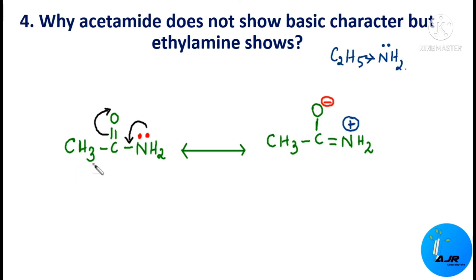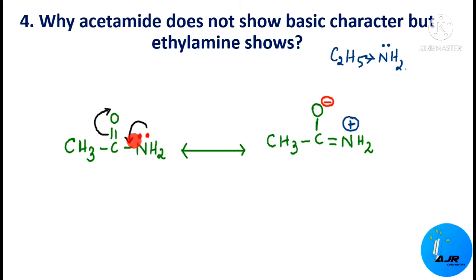In the case of acetamide, it will not show basic character even though it has an amino group. This is because the lone pair of electrons on the nitrogen is delocalizing — it moves toward the carbonyl group and undergoes resonance with the carbonyl oxygen, forming resonating structures. Due to this resonance, there is non-availability of the lone pair of electrons on nitrogen. In the resonating structure, there are no electrons on nitrogen available for protonation. That is why acetamide does not show basic character compared to ethylamine.